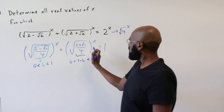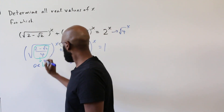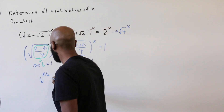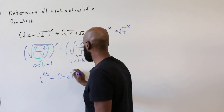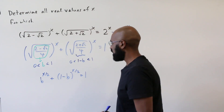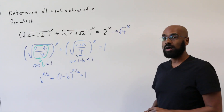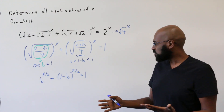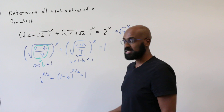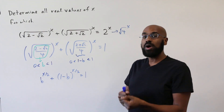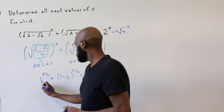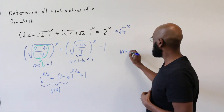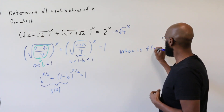So we can rewrite the left-hand side as b to the x over 2 plus (1 minus b) to the x over 2 equals 1, where b is a constant and we're trying to find all values of x satisfying this equation. One way to approach this is to think about the left-hand side as an actual function of x — I'll write this as f of x — and ask when f of x equals 1.